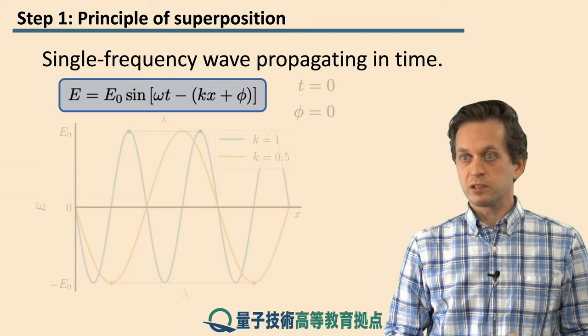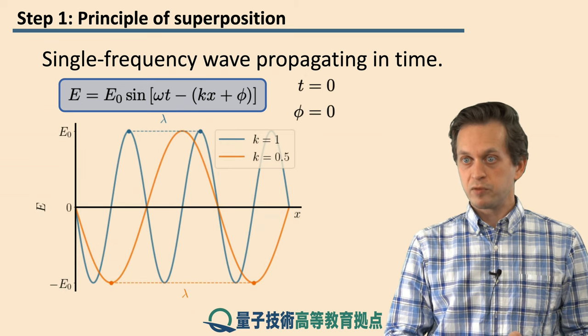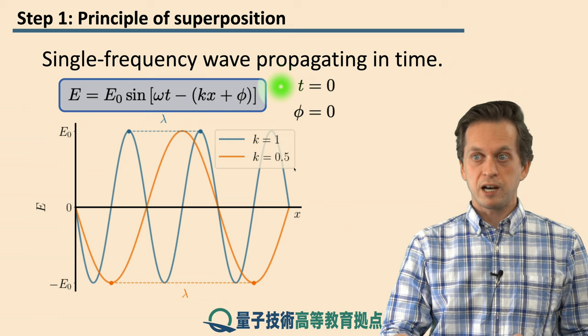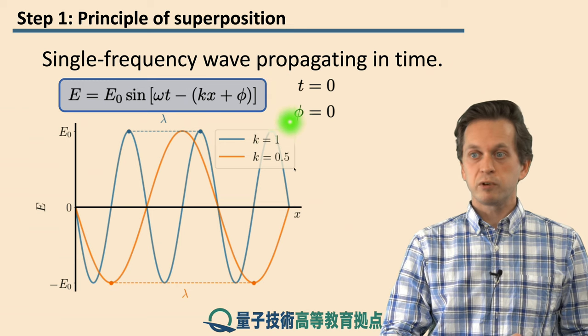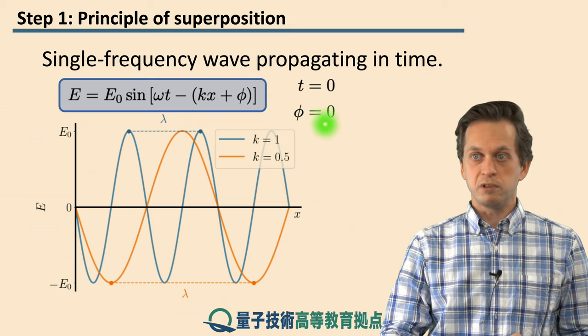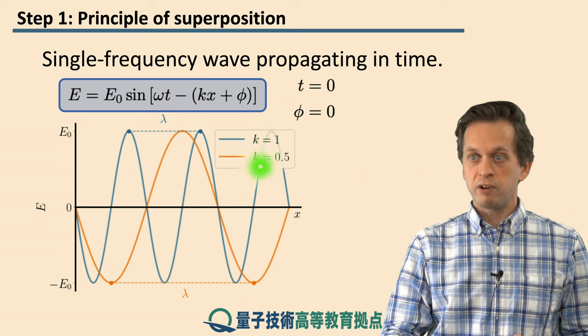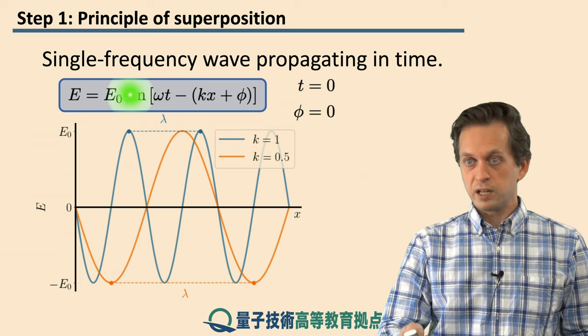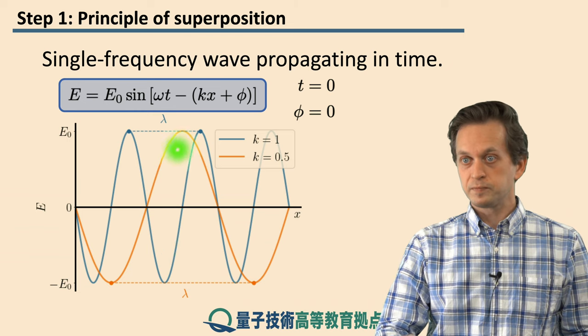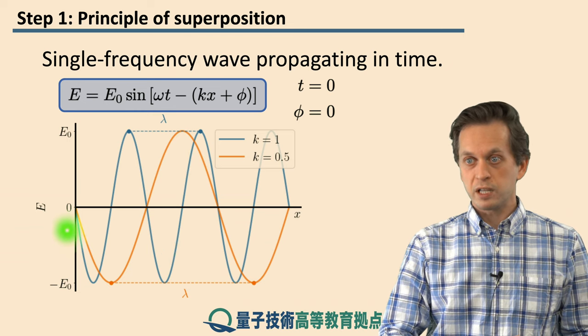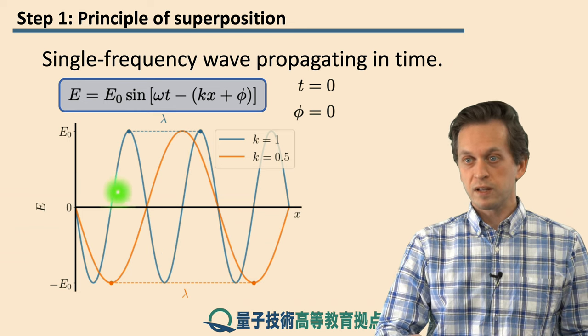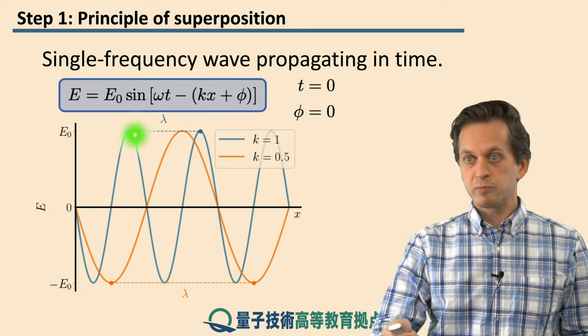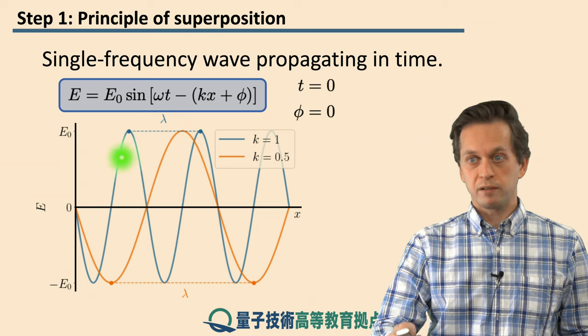So let's have a look at some examples. For example, if we freeze the wave in time, so we set time equals to zero. And for convenience we also set phi equals to zero. And we only vary k. The blue wave here is for k equals to one. Whereas the orange one is for k equals to zero point five. And these two dots, the distance between them represents the wavelength of the wave.